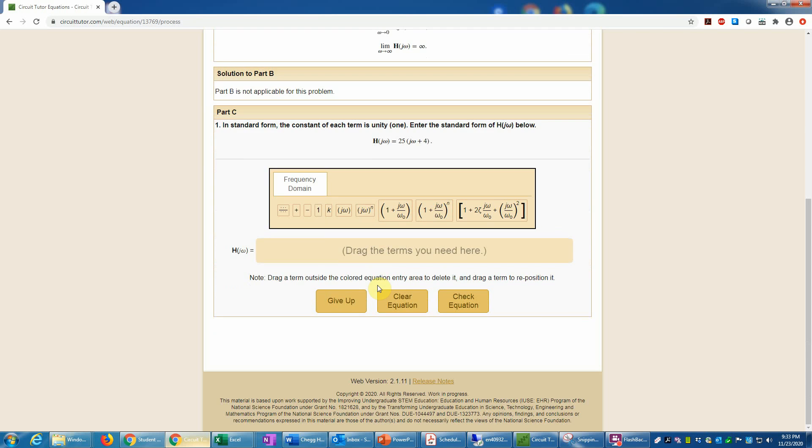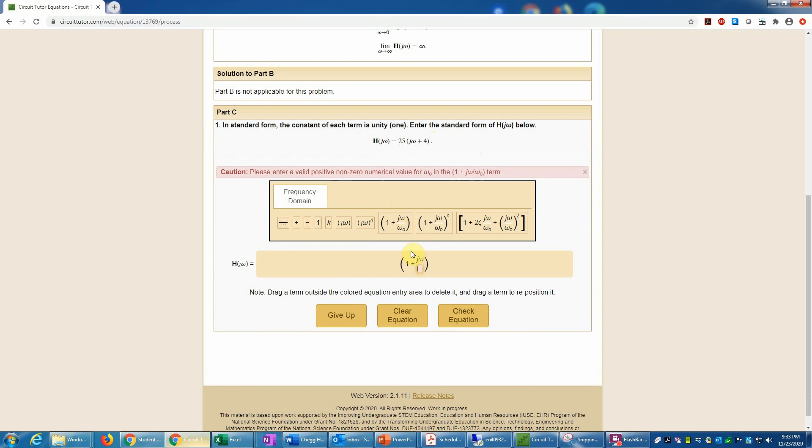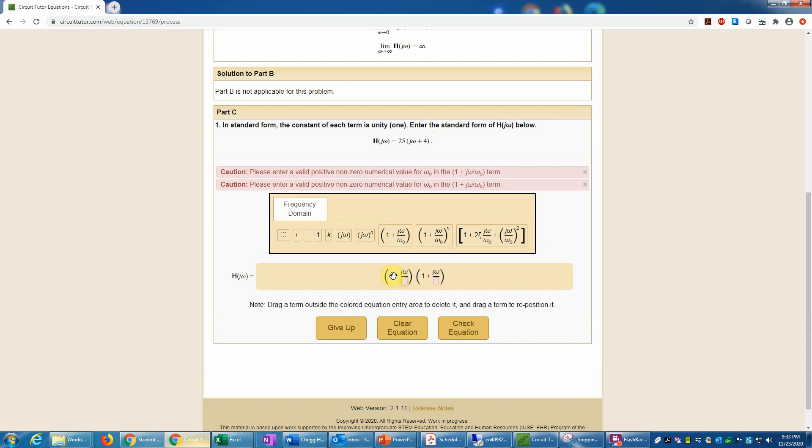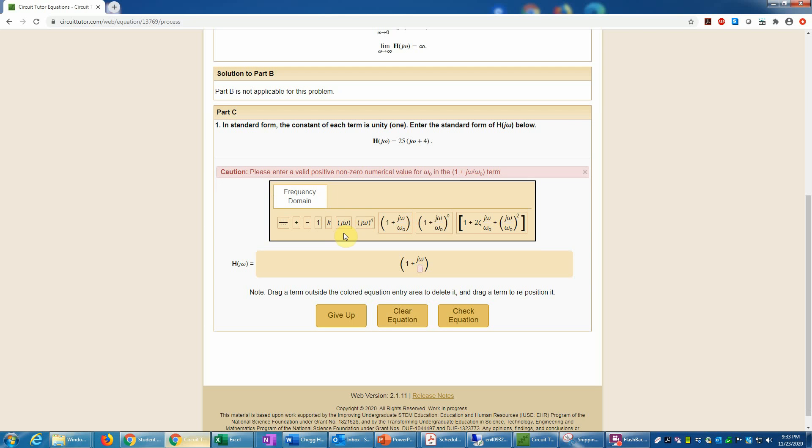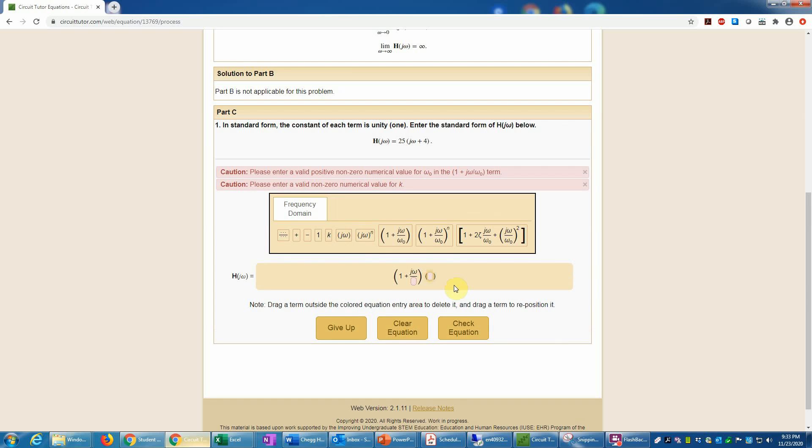The next task is to put this function into standard form. In standard form, the constant in each term is going to be 1. In this case I need a 1 plus j omega term, so I can click on that or drag it. If you want to get rid of those terms, you just drag them out of the equation entry area. I need a constant in front of that, so I'll click a K here, and I can drag it around wherever I want it.